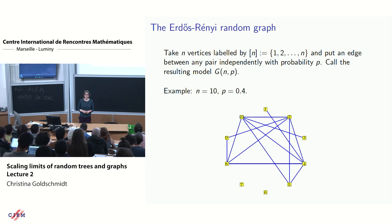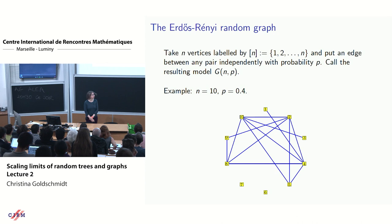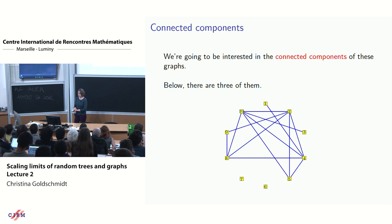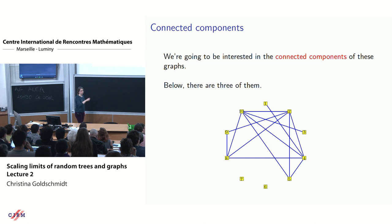We take n vertices labeled 1 up to n, and between any pair independently put an edge with probability p, or no edge with probability 1 − p. We're interested in the connected components of this graph. In a simple example with ten vertices, there are three components: one rather connected component and two singleton components.